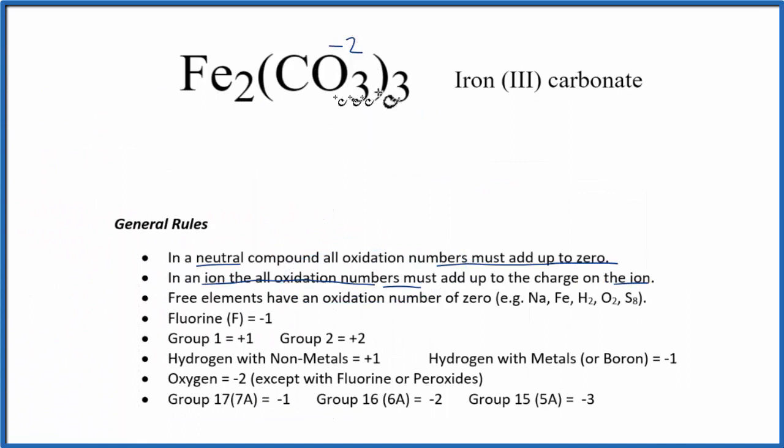We have minus 2 here. Three times minus 2 is minus 6. Because we want it to add up to zero, this has to be a positive 6.